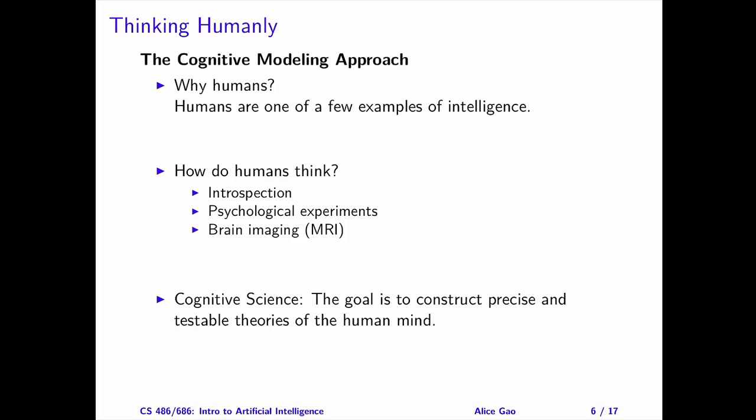For the first definition, cognitive modeling, our goal is to develop a system that thinks like humans. Why do we want to use humans as the benchmark? In our world, we do not have a lot of examples of intelligence. Humans are one of a few examples of intelligence, so we might as well use it.